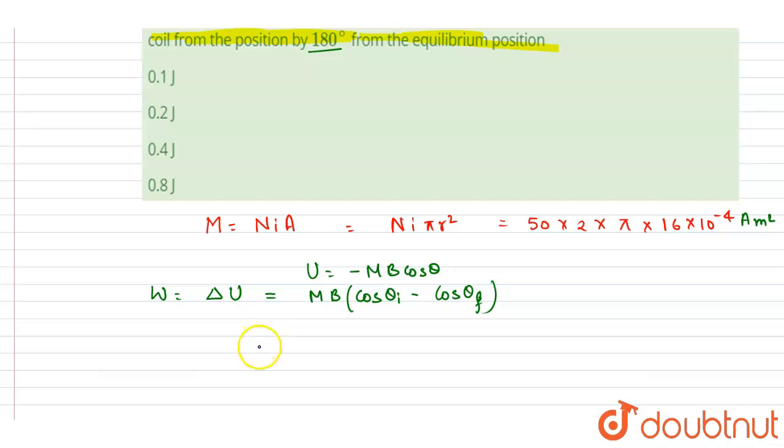Now you can put the value. We already got this magnetic moment: 16 × 2 × 50 π. So 16 × 2 × 50 π, it will be 1600 π.